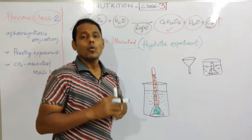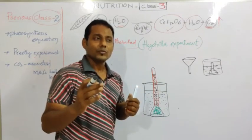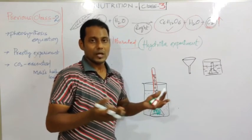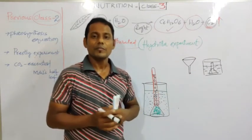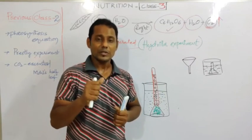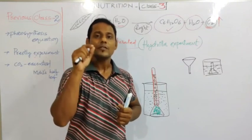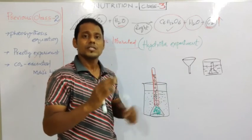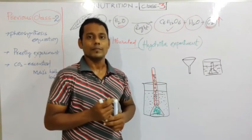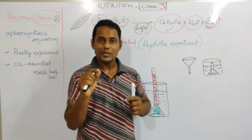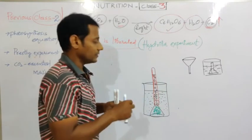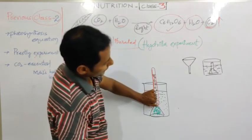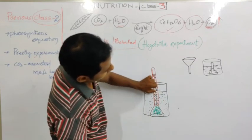The gas collected at the top of the test tube is oxygen. The main feature of oxygen is that it supports combustion - oxygen present in the air causes fire to burn. To confirm that the collected gas is oxygen, you take a matchstick or incense stick. Before introducing the fire, with the help of your thumb, you close the mouth of the test tube tightly.